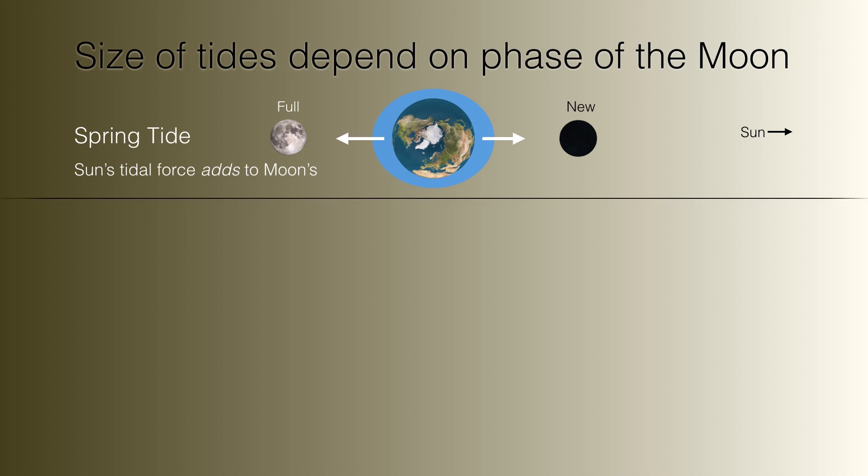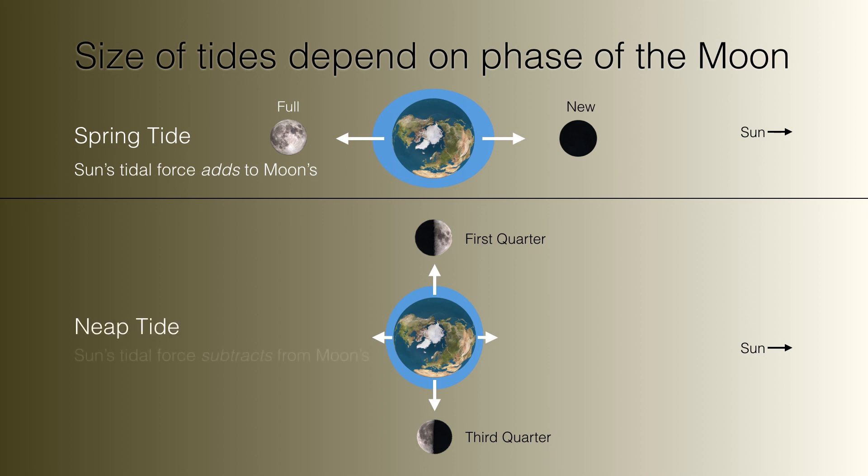Likewise, if the Moon is at either first or third quarter, then the Sun's tidal forces subtract a little bit from the Moon's tidal forces, and so you get what are called neap tides. You still get high tides and low tides, but they're just not quite as strong as they are during the spring tides.